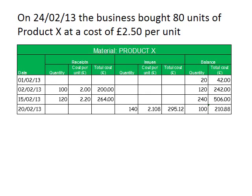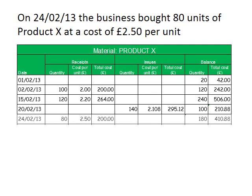Our next transaction is a further purchase of units — 80 units of Product X at a cost of £2.50 per unit. We record the date, 80 units in the receipts quantity column, £2.50 per unit, and a total cost of £200. Our balance now moves to 180 units with a total cost of £410.88.